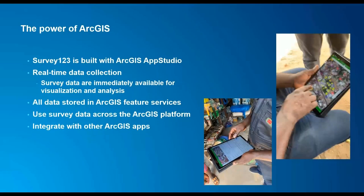Survey123 is built with the ArcGIS App Studio and provides real-time data collection — survey data are immediately available for visualization and analysis when connected. If disconnected, data is stored and transmitted when you're back to a connection point. Once transmitted, all data is stored in ArcGIS feature services, allowing us to use that data across the platform. We can feed it into a dashboard to understand status, or integrate it with other apps. For example, if you use Survey123 for pre-enumeration demarcation to collect building-level information, you could immediately access that data from a geodatabase for use in the actual enumeration.